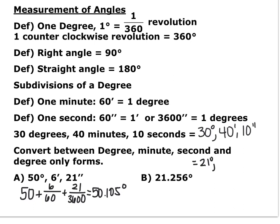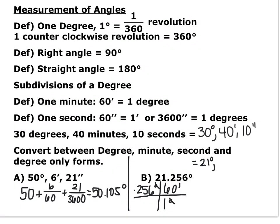We convert 0.256 degrees into minutes first, then whatever decimal remains in the minutes we convert to seconds. Since there are 60 minutes per degree, 0.256 degrees times 60 gives 15.36 minutes. When writing degrees-minutes-seconds, you should not have decimals in the minutes, so we take 15 as our minutes and carry the 0.36 minutes forward.